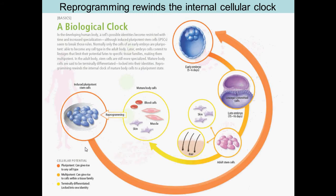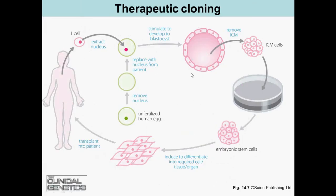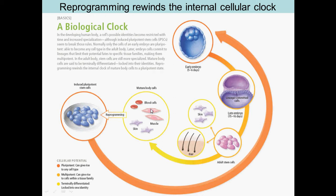This process raises ethical concerns because it destroys the embryo. An alternative method avoids destroying embryos. In the normal development pathway, lineages are committed and you end up with adult stem cells, which are multipotent, whereas the ICM cells are pluripotent, and terminally differentiated cells are at the far end.